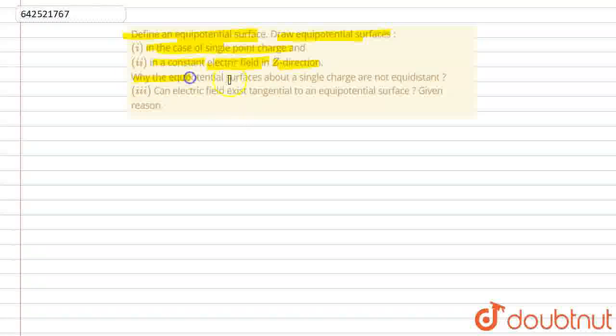And why the equipotential surface about a single point charge are not equidistant. And the point 3rd says, can an electric field exist tangential to equipotential surface? Give reasons.